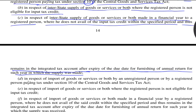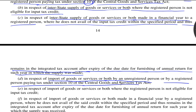Again, out of integrated tax paid to the central government in respect of import of goods or services or both, by an unregistered person or by a registered person paying tax under Section 10 of CGST Act. Again, out of integrated tax paid to the central government in respect of import of goods, services or both, where the registered person is not eligible for input tax credit.